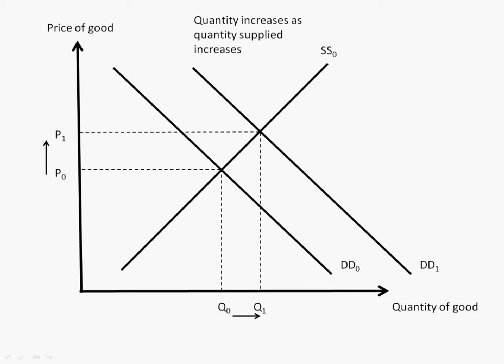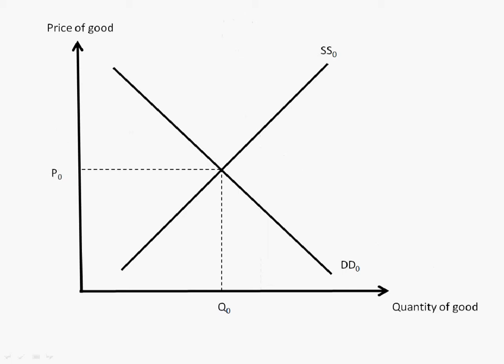When the supply of goods increases, the supply curve will shift to the right. SS1 will be the new curve. This will result in a surplus represented by QDQS.